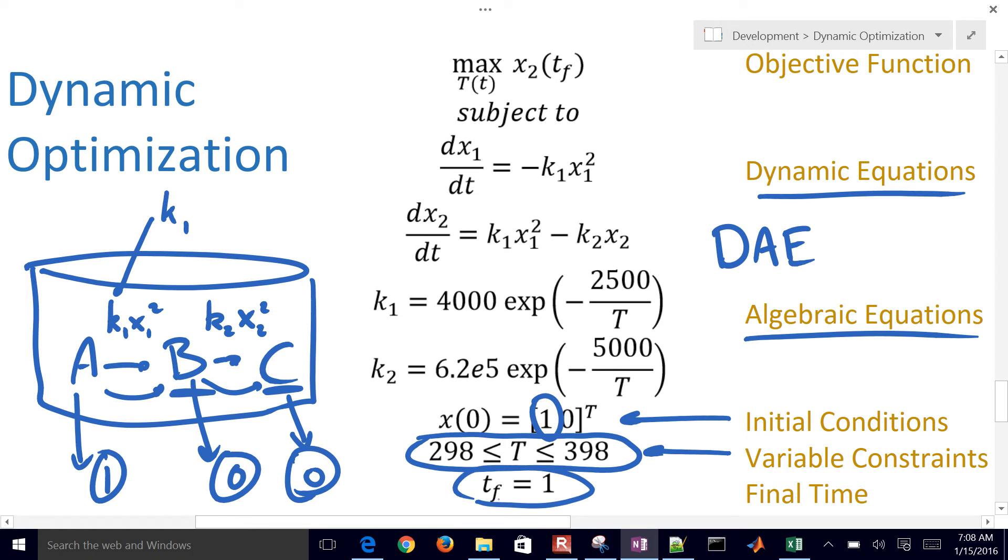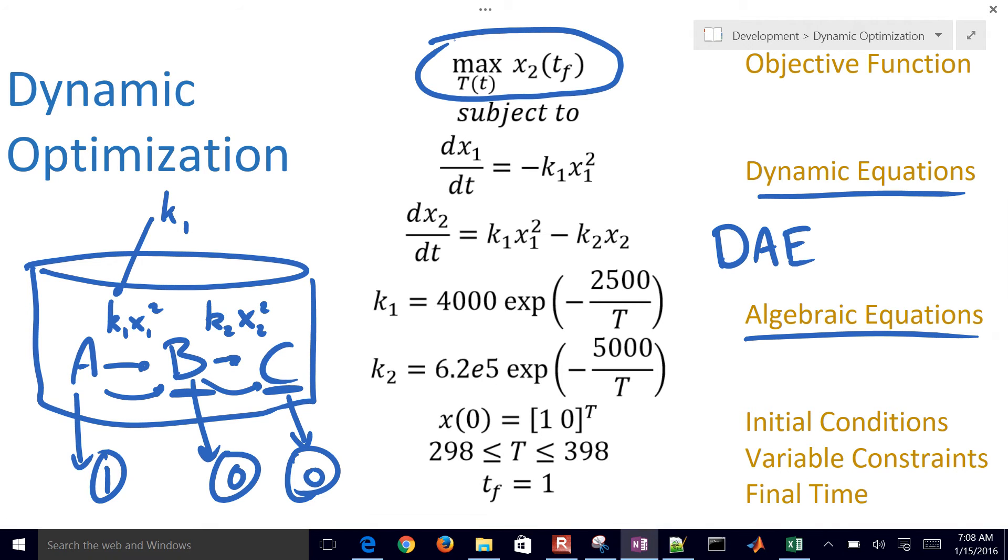And then we're going to go to a final time of just 1. So we'll start at 0, go to a final time of 1, and then try to maximize the amount of X2 at the final time, or the concentration of B.